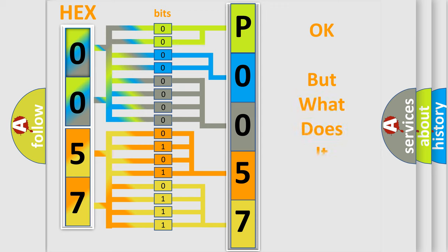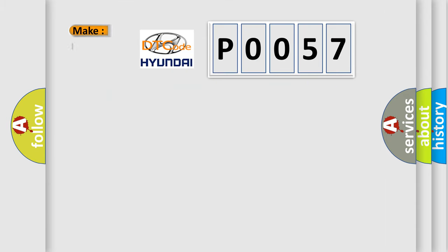The number itself does not make sense to us if we cannot assign information about what it actually expresses. So, what does the diagnostic trouble code P0057 interpret specifically for Hyundai car manufacturers?